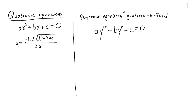We are going to use substitution. We are going to squint and pretend that this is a quadratic equation, substitute x for y to the n, solve it like a quadratic equation, and then go back to our substitution and continue solving. Note that y doesn't have to be a single variable — y can be a polynomial in and of itself and that is going to be our substitution. Let's look at some examples.